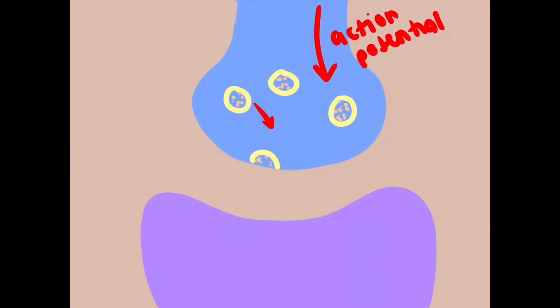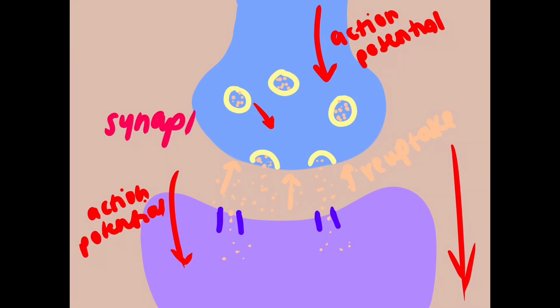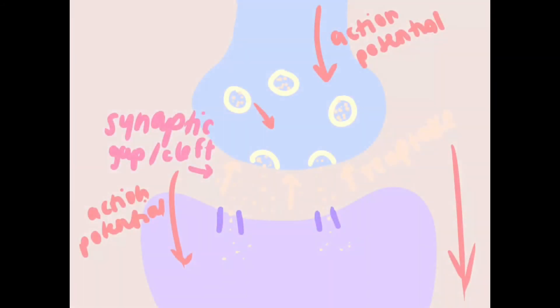Let's quickly review the process of neurotransmission. Here we have the sending cell in blue and the receiving cell in purple, with vesicles containing neurotransmitters. The electrical action potential travels down the sending cell, causing the vesicles to bind to the cell membrane and be released into the synaptic cleft. Some neurotransmitters will be absorbed by the receiving cell to transfer the action potential, and some will be taken back through reuptake or metabolized. The whole structure is called a synapse, but the gap is called the synaptic gap or cleft.